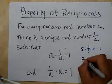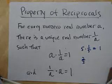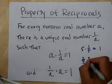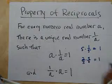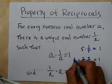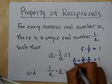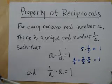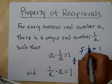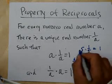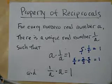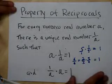2/3 also has a reciprocal. What is it? It's its re-flipperical: 3/2. If you multiply across, you get 6 over 6, which is 1. And 5 is the same thing as 5 over 1, so its reciprocal is 1 over 5, giving you 5 over 5, which equals 1. That's the property of reciprocals.